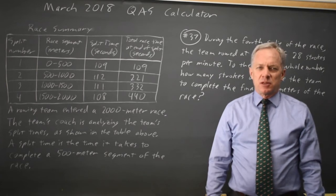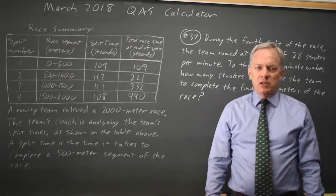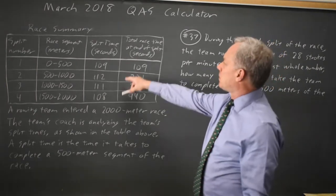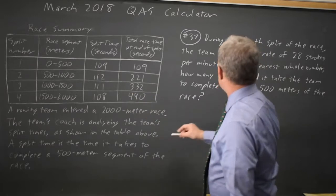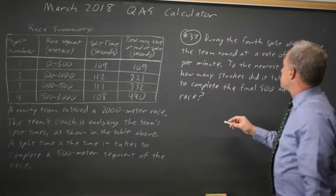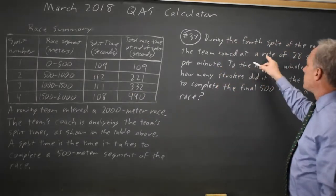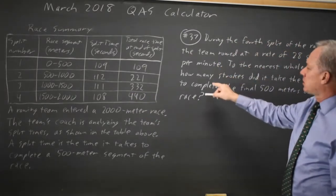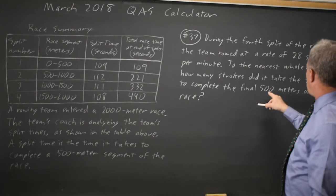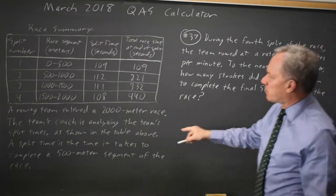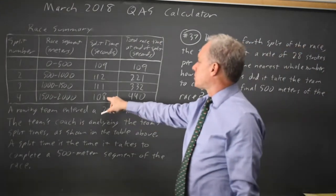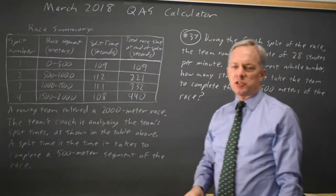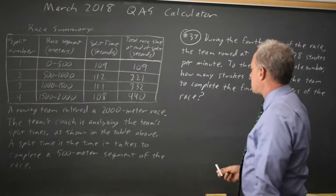This is question 37. The College Board gives us data on a rowing race and asks us: at a rate of 28 strokes per minute on the final 500 meters, which was 108 seconds, how many strokes is that?